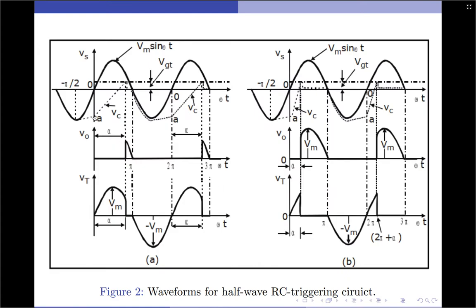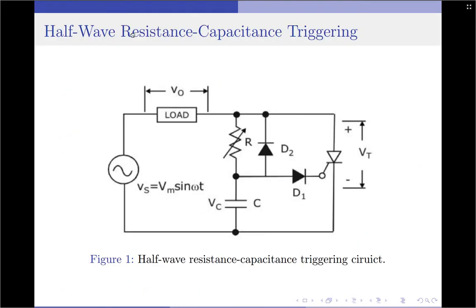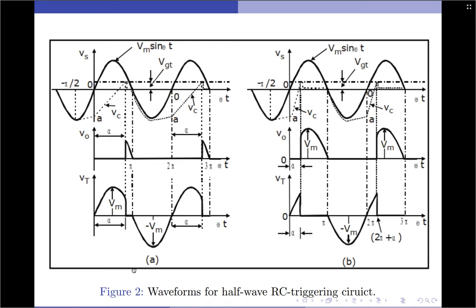In the negative half cycle — since we are discussing half wave RC triggering — the thyristor never triggers, so the load voltage is always 0 irrespective of whether the value of R is high or low. Coming to the second set of waveforms for the case when R is very low: when R is very low, the capacitor in the positive half cycle starts to charge very quickly. In the negative half cycle the capacitor charged to minus Vm, and at the beginning of the positive half cycle it is around minus Vm. Since R is very low, the capacitor discharges from minus Vm to 0 and charges to VGT at a much faster rate.